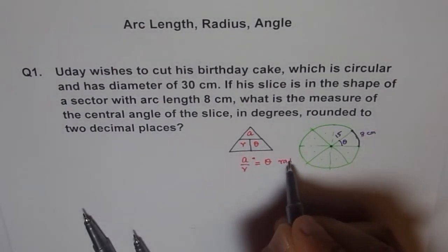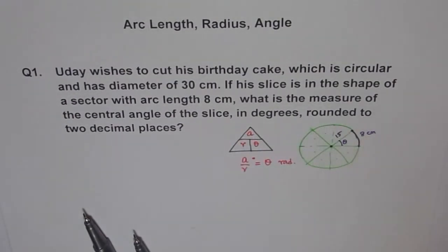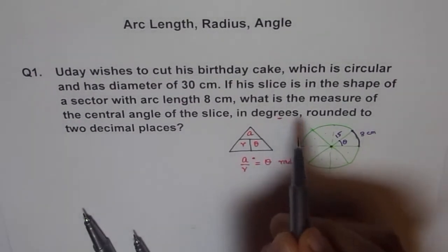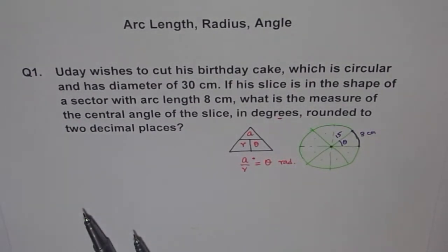So here theta is in radiance, not in degrees. So the catch here in this problem is that we want angle in degrees. Degrees, not radiance. That's the difficulty. Students have seen. They just find this ratio, leave it, round it to two decimal places. And they think the question has been answered. Now it is not. So now you know it. Theta is in radiance.